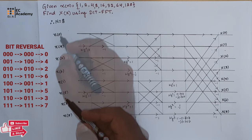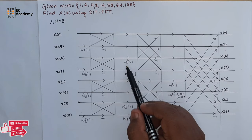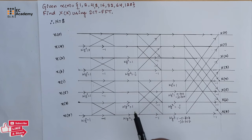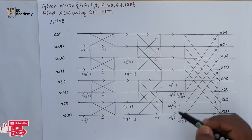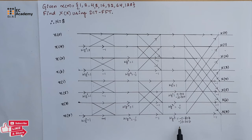At the first stage we have W8 to the power of 0, whose value is 1. At the second stage we have W8 to the power of 0 and W8 to the power of 2. In the third stage we have W8 to the power of 0, W8 to the power of 1, W8 to the power of 2, and W8 to the power of 3, with values 1, 0.707 minus j 0.707, minus j, and minus 0.707 minus j 0.707 respectively.